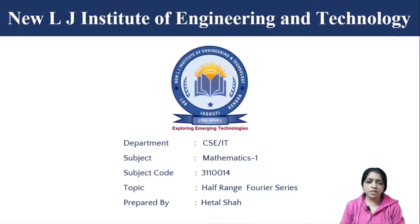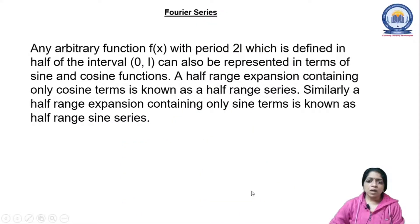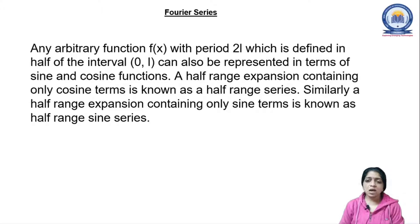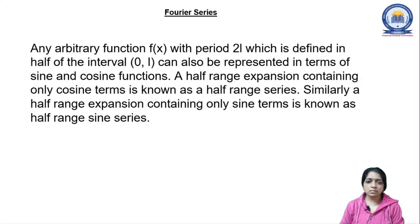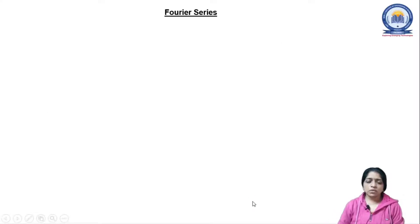Our topic is half range cosine and sine series with the period 0 to L. Any arbitrary function f(x) with period 2L, which is defined in half of the interval 0 to L, can also be represented in terms of sine and cosine functions. A half range expansion containing only cosine terms is known as the half range cosine series, and similarly a half range expansion containing only sine terms is known as the half range sine series.